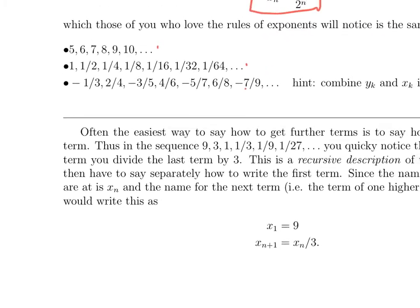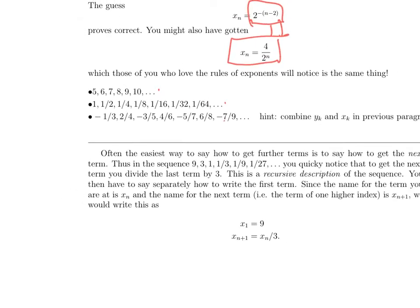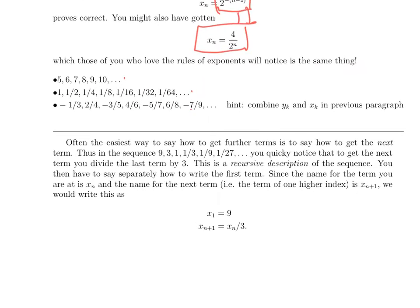But often it's not possible to give a direct formula, and often it's not very natural. We noticed in at least one of those examples that the simplest way to say the pattern was how to get the next term from the term you're on. So for example, in the sequence 9, 3, 1, 1/3, 1/9, 1/27, each term is gotten by dividing the previous term by three. Nine divided by three is three. Three divided by three is one. One divided by three is 1/3. 1/3 divided by three is 1/9.